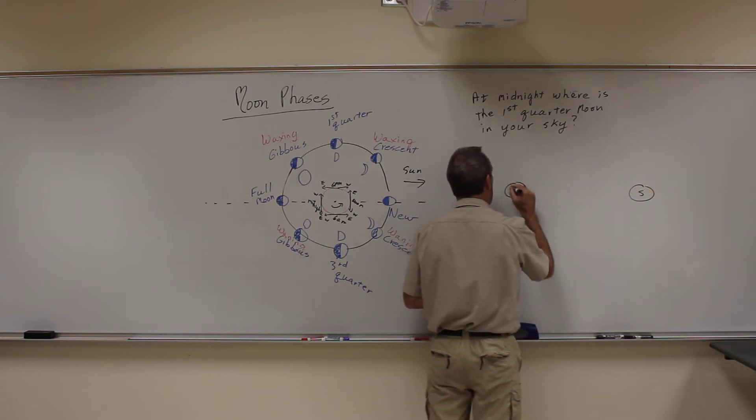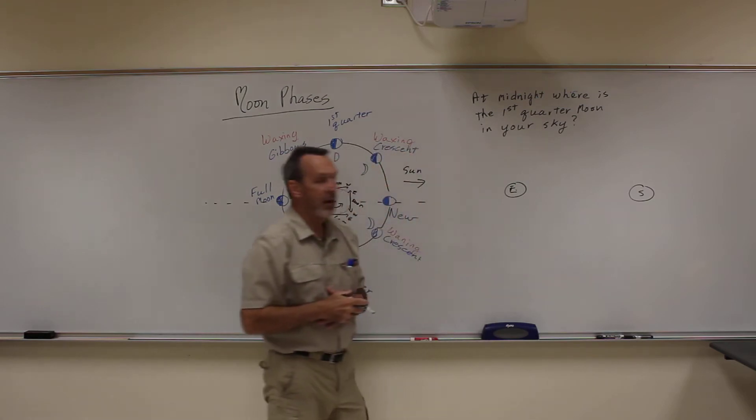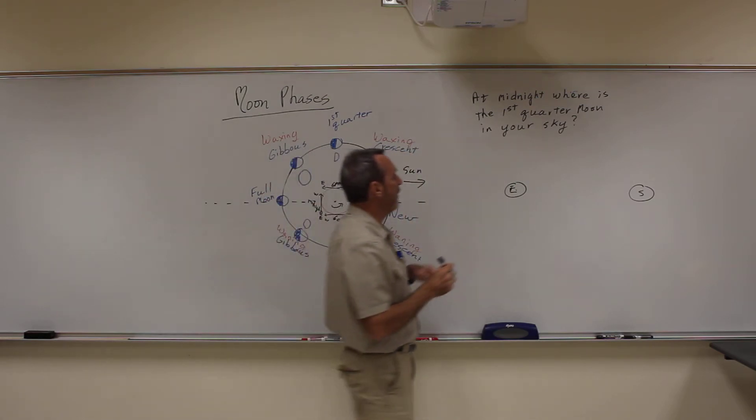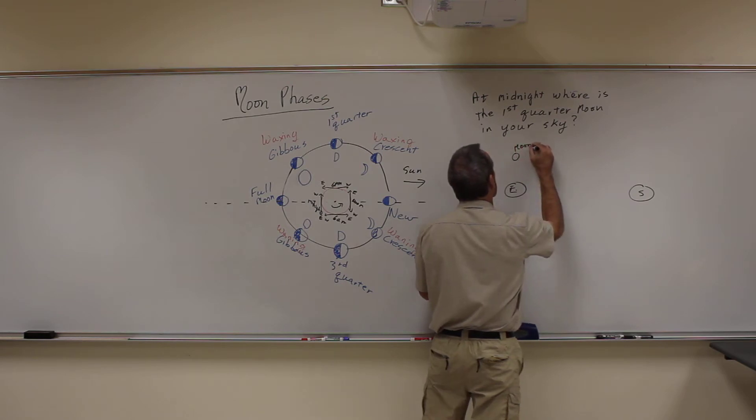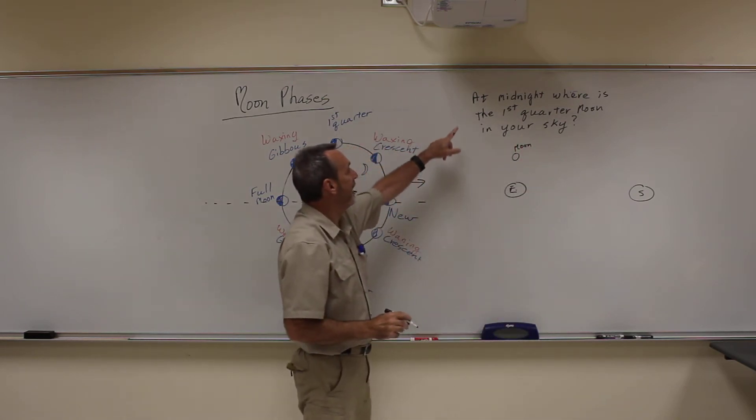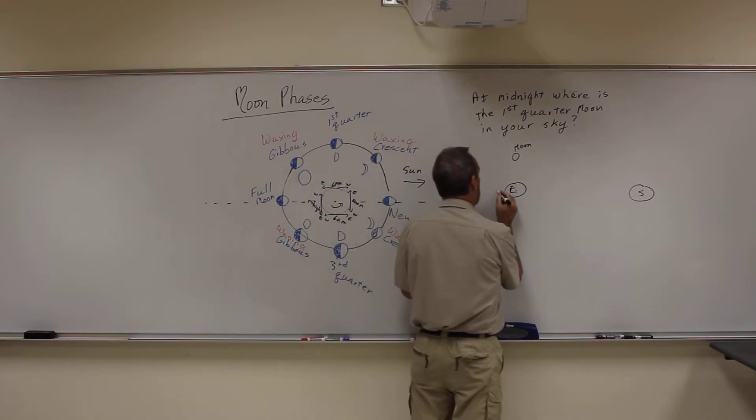Here's the Sun. Here's the Earth. Now I know the moon is first quarter, so the moon's up here. Here's the moon. Okay? And I know what time it is. It's midnight. So I know that Herb is right here. This is where midnight is.